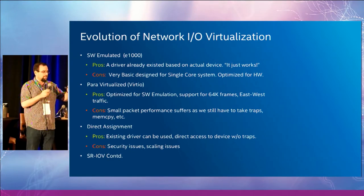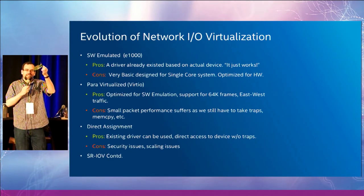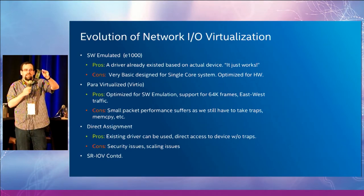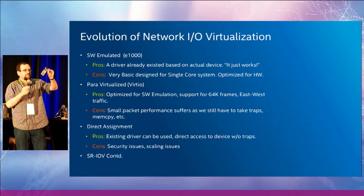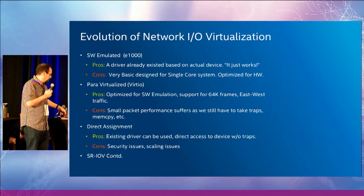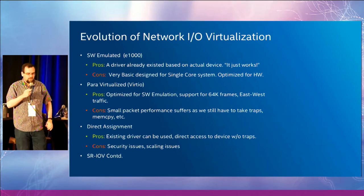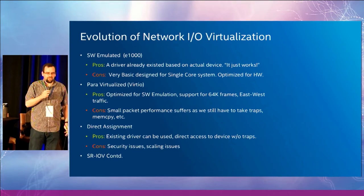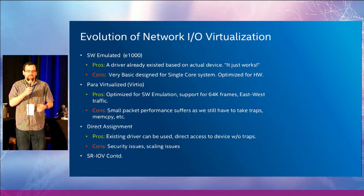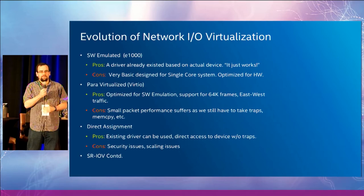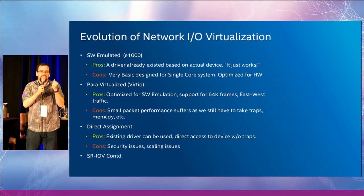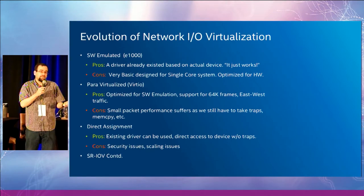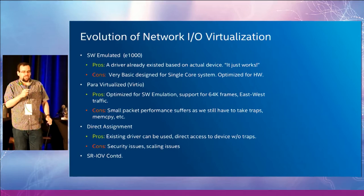Emulating something like this in your hypervisor works if you want to install an OS or let somebody access their email and transfer small files. But you're not going to emulate something like that in a system that needs to handle a large, heavy workload. The next solution becomes kind of obvious: what if instead of emulating a device that's actual hardware, we emulate something designed to run in software? That's where para-virtualization comes in.